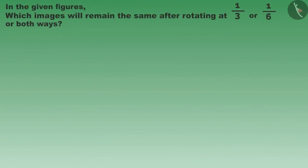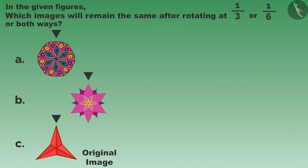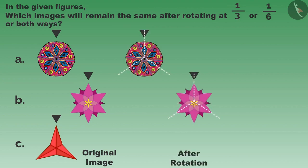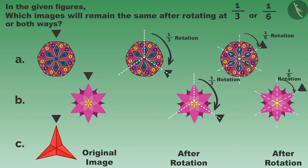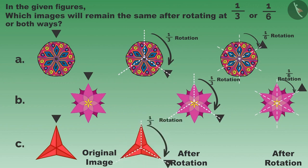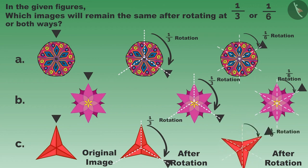Children, look at these images and find out which images will remain the same after one-third or one-sixth rotation, or both. Figure A and figure B are not changing after one-third rotation and one-sixth rotation. Figure C does not change after one-third rotation, but after one-sixth rotation it will change and look different.